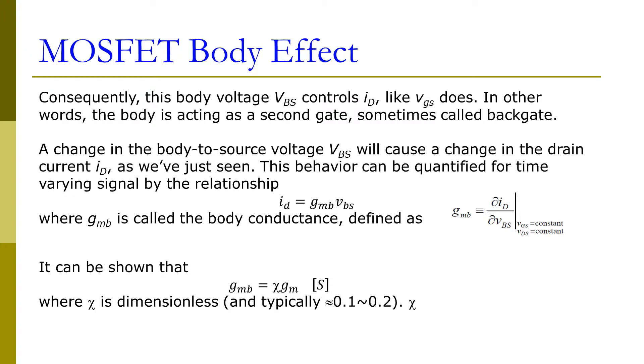Consequently, this body voltage Vbs controls the drain current just like the gate voltage Vgs does. In other words, the body is acting as a second gate, sometimes called the back gate. A change in the body-to-source voltage Vbs will cause a change in the drain current.